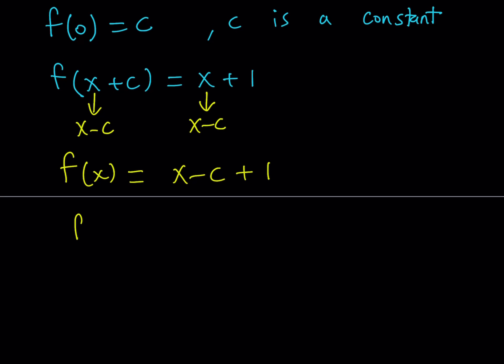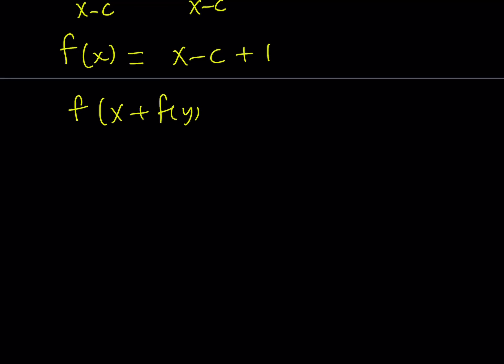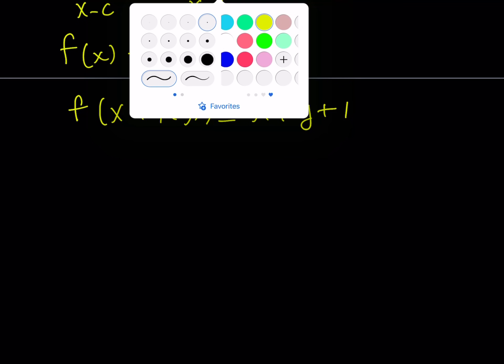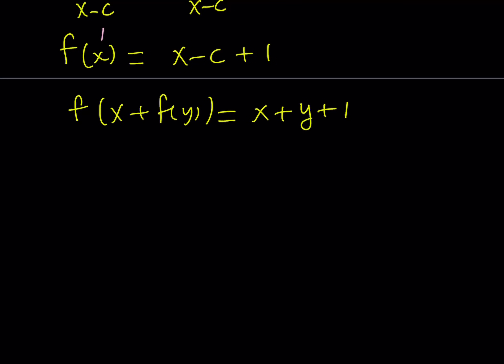What is our original equation? It is f of x plus f of y equals x plus y plus 1. I'm going to show you an alternative method to get to the answer after this. So let's go ahead and do this way first. So I can just go ahead and substitute. I hope you don't misunderstand. It's not f of x plus f of y, but f of the quantity x plus f of y. So it's going to be equal to x plus f of y on the right hand side minus c plus 1. And we also know that this is equal to x plus y plus 1.